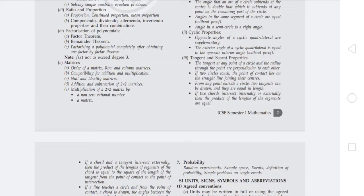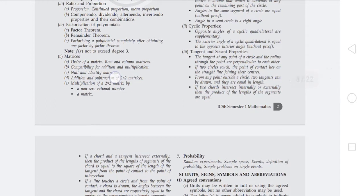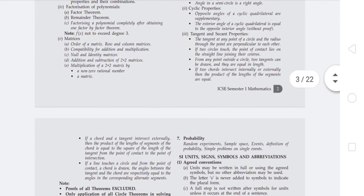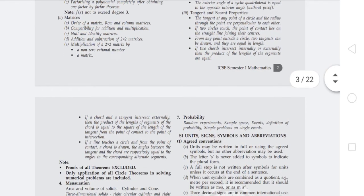Tangent and secant properties: the tangent at a point of a circle and the radius through that point are perpendicular to each other. If two circles touch, the point of contact lies on the straight line joining the centers. From any point outside a circle, two tangents can be drawn and they are equal in length.